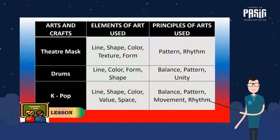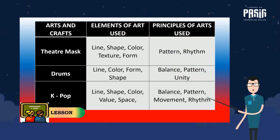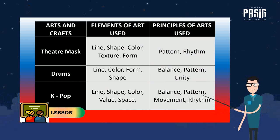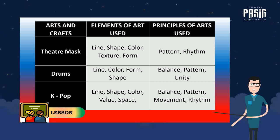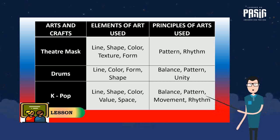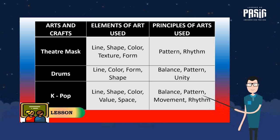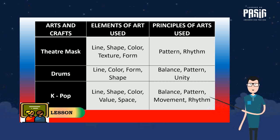The following are the elements and principles of art used in the artworks of Korea. In theater masks: line, shape, color, texture, form, pattern, and rhythm. In drums: line, color, form, shape, balance, pattern, and unity. In K-pop: line, shape, color, value, space, balance, pattern, movement, and rhythm.